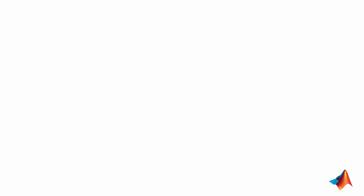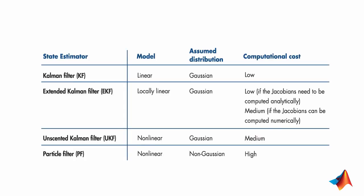For comparison, here are the properties of the filters that we've discussed so far. A Kalman filter only works on linear systems. For state estimation of nonlinear systems, you can use an EKF, UKF, or PF.